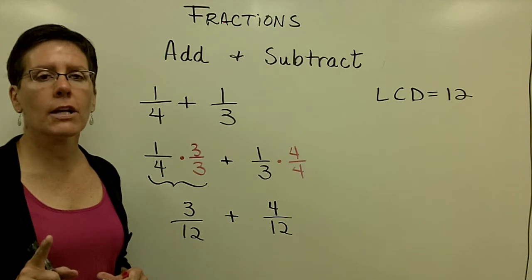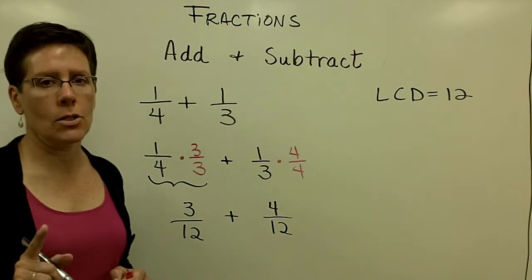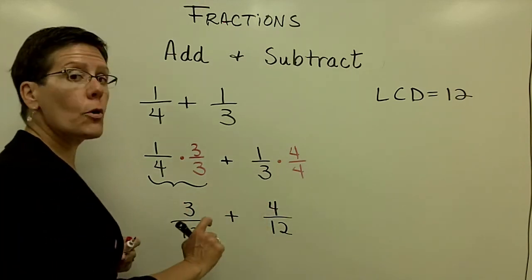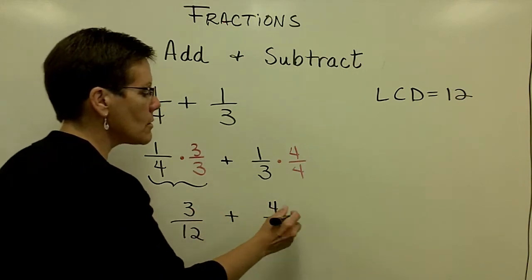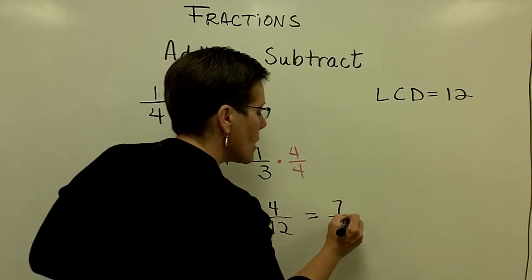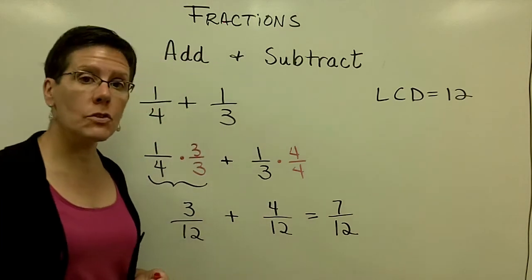And when you add fractions, you only add the numerators. So there's 3/12 and 4/12. The 3 plus the 4 is 7 over the common denominator of 12.